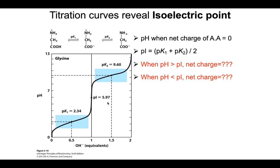Why do we want to know the isoelectric point of a molecule? Because it gives us a tool. If the pH is above the isoelectric point, the molecule becomes deprotonated and carries a net negative charge. When the pH is below the isoelectric point, the molecule is more often protonated and carries a net positive charge. Knowing the isoelectric point gives us a benchmark: if we know the pH of a solution and the isoelectric point, we can determine the net charge on that molecule.